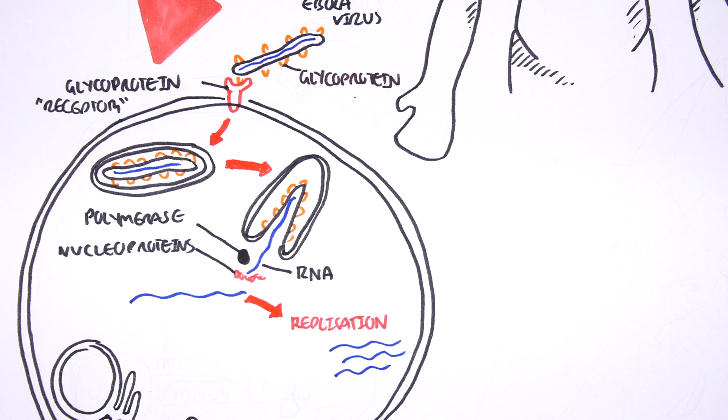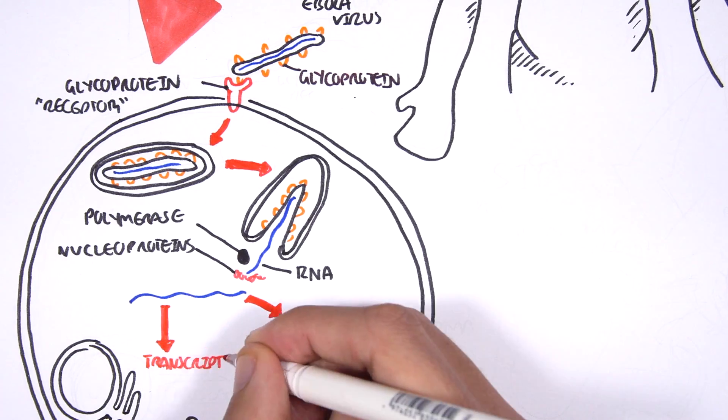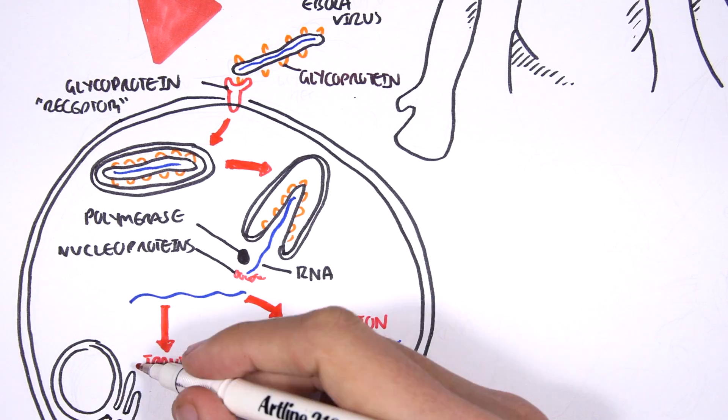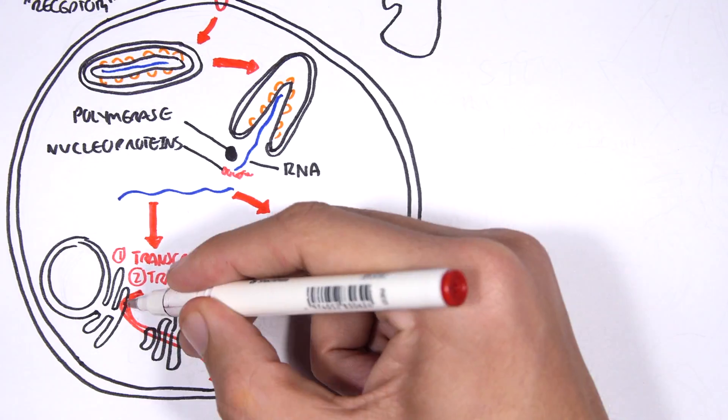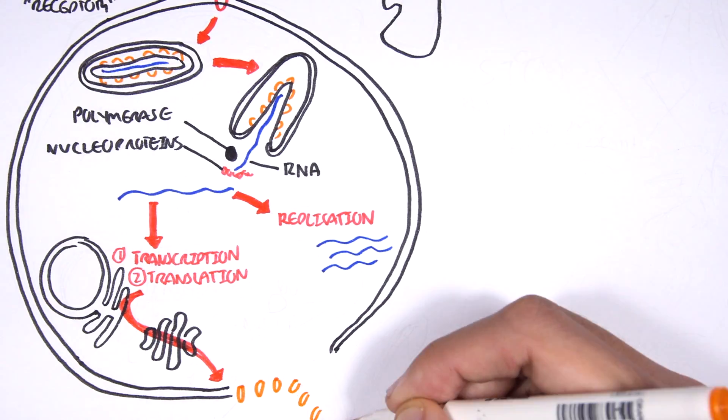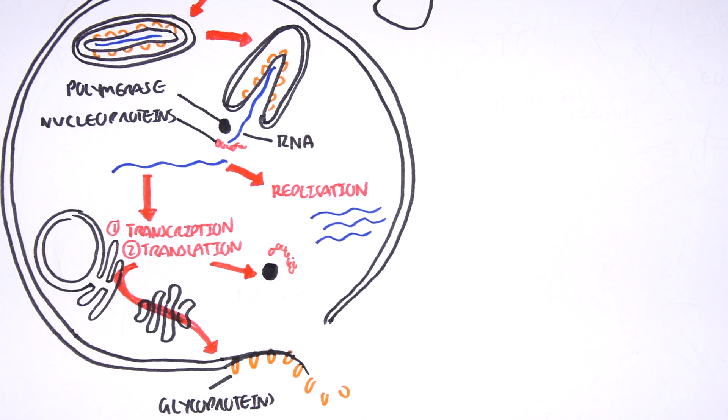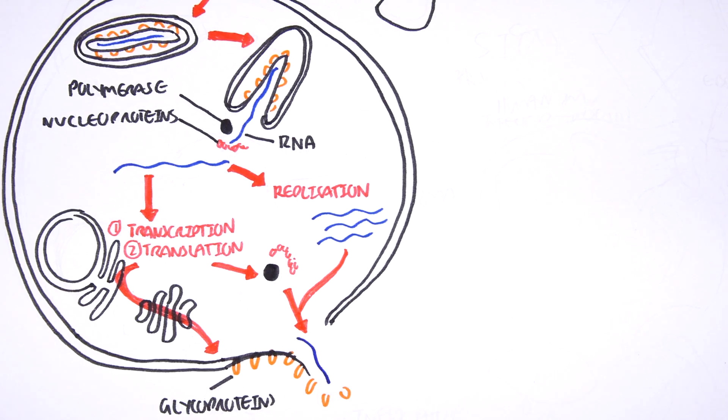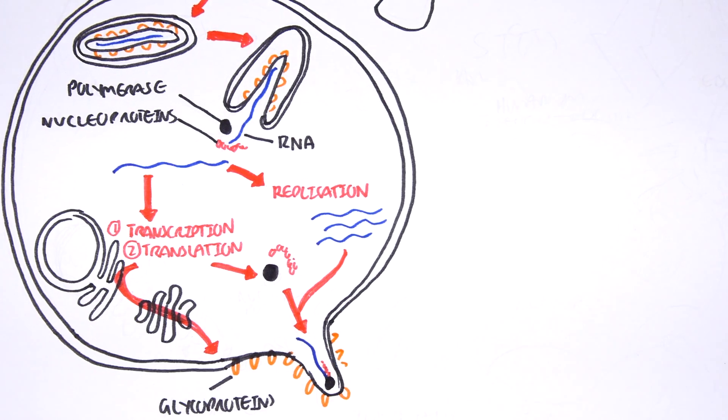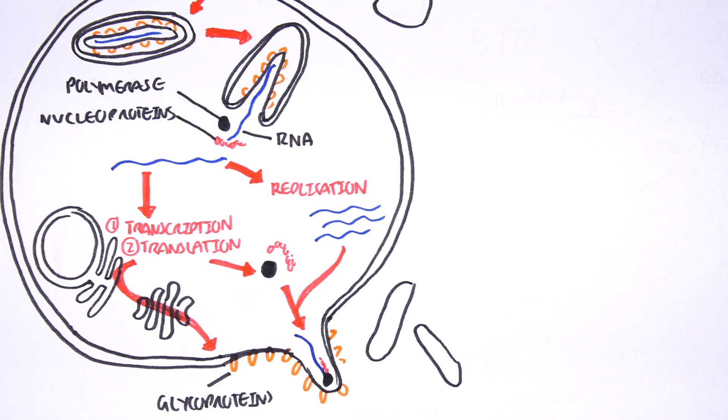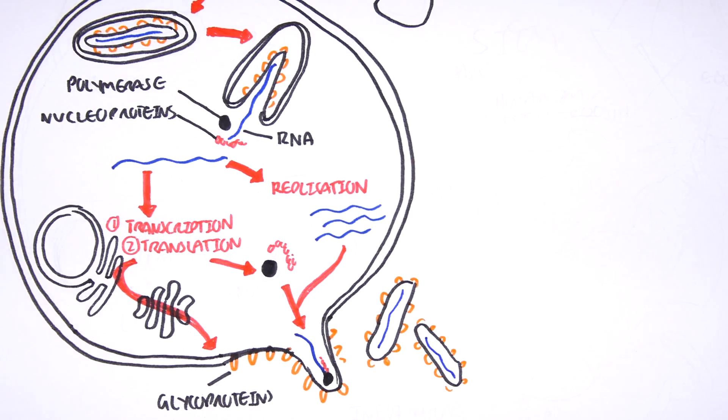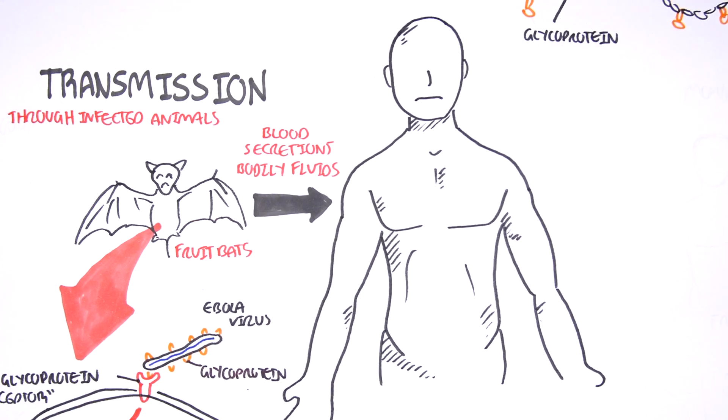To put it in simple terms, the Ebola virus basically hijacks the cell and replicates within it. Once it replicates all its content and genetic material, it will all be packaged up again to create multiple Ebola viruses. The Ebola virus just keeps replicating within the fruit bat. The fruit bat's internal body is an optimal environment for Ebola virus replication.